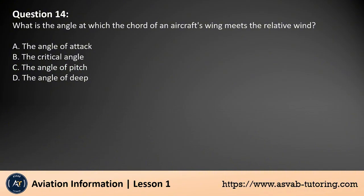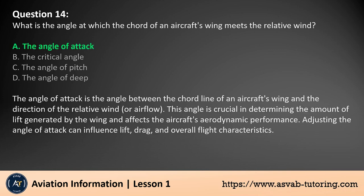Question 14. What is the angle at which the cord of an aircraft's wing meets the relative wind? A. The angle of attack. B. The critical angle. C. The angle of pitch. D. The angle of deep. The answer is A. The angle of attack is the angle between the cord line of an aircraft's wing and the direction of the relative wind, or airflow. This angle is crucial in determining the amount of lift generated by the wing and affects the aircraft's aerodynamic performance. Adjusting the angle of attack can influence lift, drag, and overall flight characteristics.